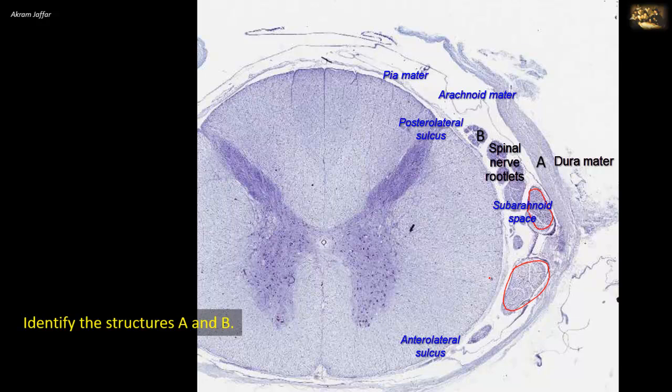Now why do they descend? The reason is that the spinal cord is shorter than the vertebral canal. Thus, spinal cord segments are located cranial to the numerically equivalent vertebra. In the fetus, the spinal cord runs the whole length of the vertebral column. After the third month of fetal development, the vertebral column elongates more rapidly than the spinal cord, so that by the time of birth, the caudal end of the spinal cord is opposite the disc between the second and third lumbar vertebrae.